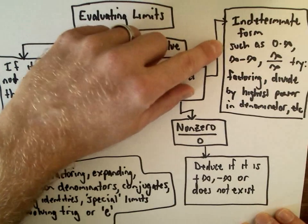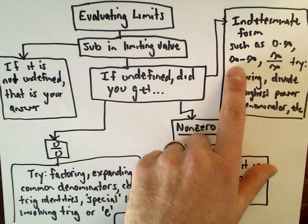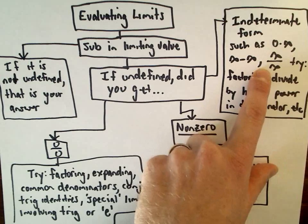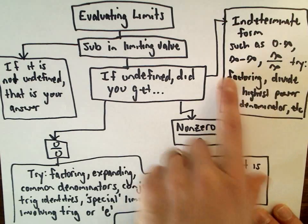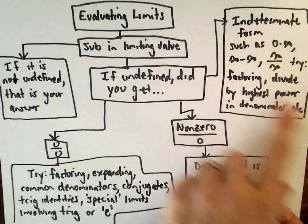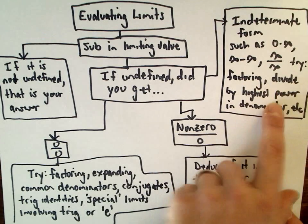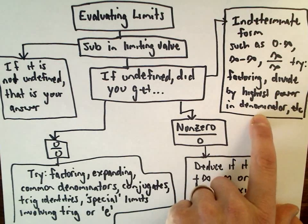If you get indeterminate forms such as 0 times infinity, infinity minus infinity, infinity divided by infinity, it could be positive or negative. Try some algebra. You may factor. You may divide. A lot of times you divide by the highest power in the denominator.